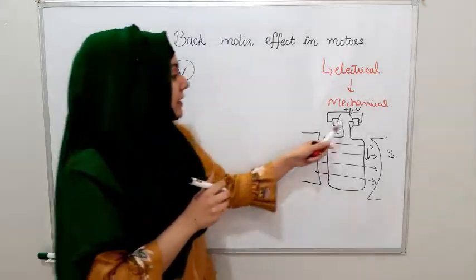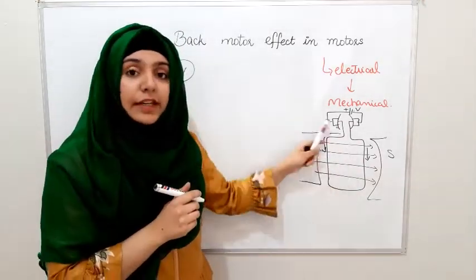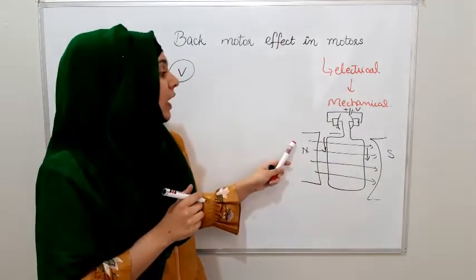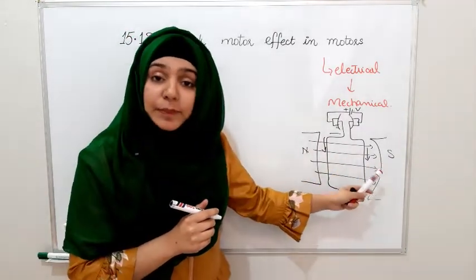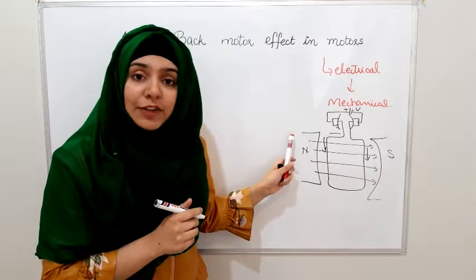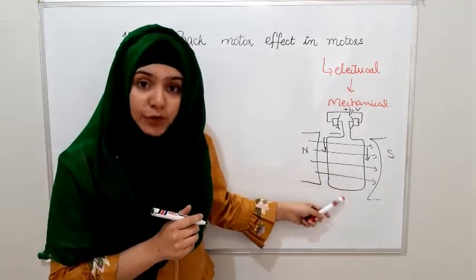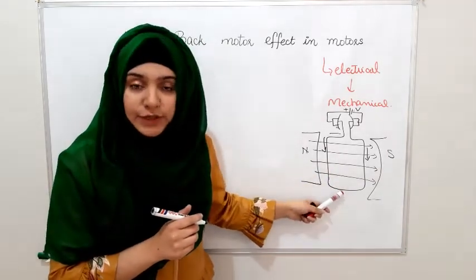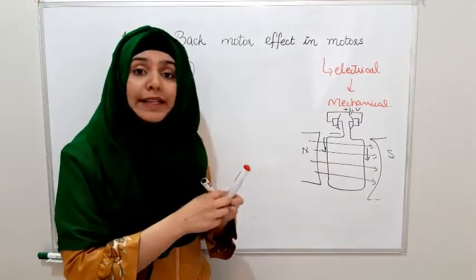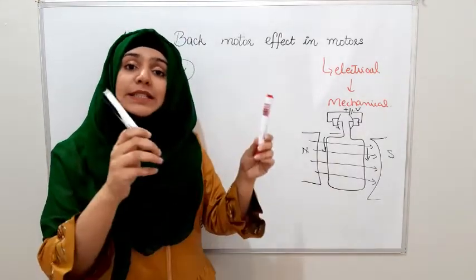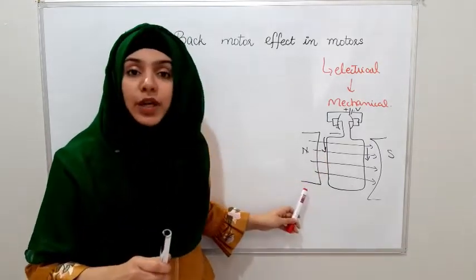As the current passed through, because of the current flow, a magnetic field is also available. In that magnetic field, a magnetic force starts to act. What does the magnetic force do? It produces a torque in this coil, which means the coil will rotate.